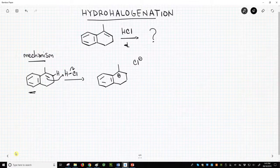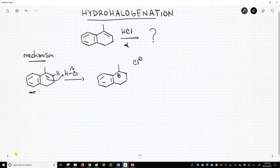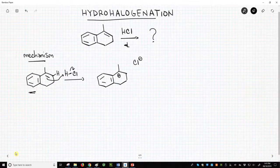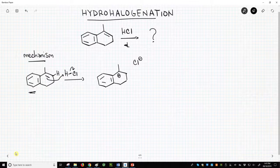When we protonate the alkene, the hydrogen from HCl goes on the less substituted alkene carbon. This puts the carbocation on the more highly substituted carbon, making it more stable - a tertiary carbocation.